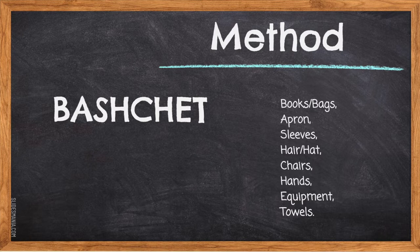H stands for long hair that reaches the shoulders, which needs to be tied back, or hats that need to be removed. C stands for chairs that should be tucked under your table and out of your way. H stands for hands that should be washed properly for 30 seconds using hot water and soap. E stands for equipment, which you should get out as quickly as possible. T stands for towels — you need at least two dish cloths and two tea towels.